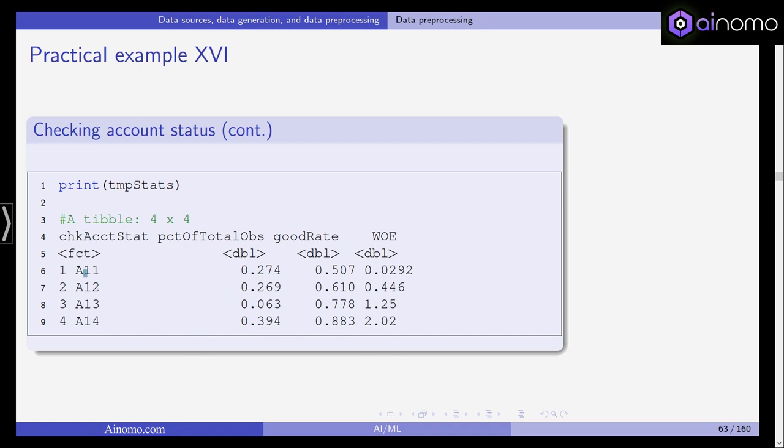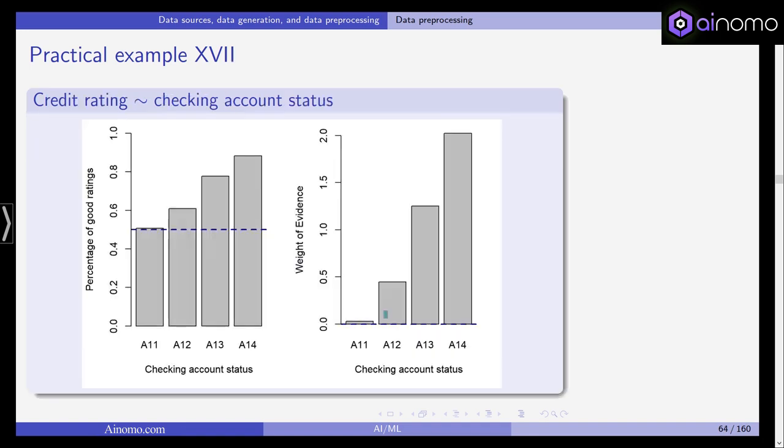If we print those results, you can see for these four levels we have a percentage of total observations of 27%, 27%, 6%, and 39%, with good ratings of 50%, 61%, and so on. The weight of evidence is more tilted towards the extremes. If we plot this and compare the two statistics, the percentage of good ratings in these four bins and the weight of evidence for those four levels, we can see that based on the percentage of good ratings, it seems to be increasing. The fourth level seems to have more predictive power to explain default rates.